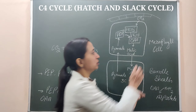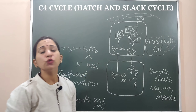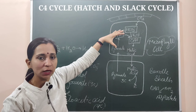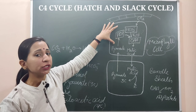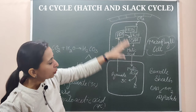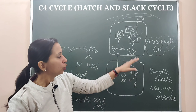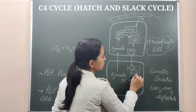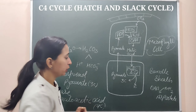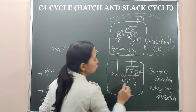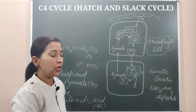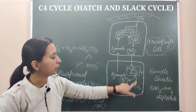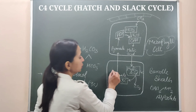All the steps up to OAA formation happen in the mesophyll cells, where temperature is high and oxygen concentration is also high due to light reactions occurring there. The malic acid or aspartate is transported to the bundle sheath cells through plasmodesmata. In the bundle sheath cells, the 4-carbon malic acid dissociates into a 3-carbon compound and releases 1 carbon in the form of CO2.